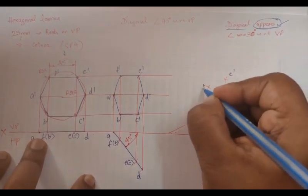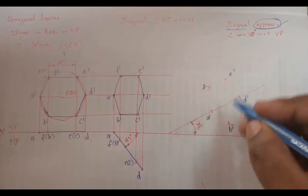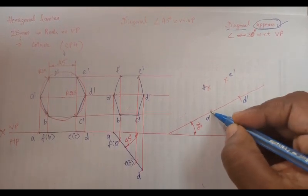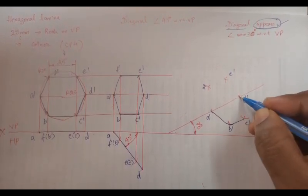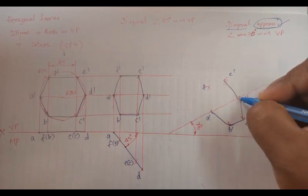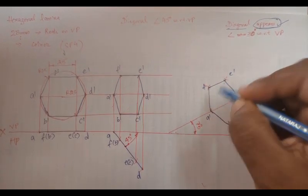Now I am going to join those intersection points: A dash to B dash to C dash to D dash to E dash to F dash. Here F dash, E dash, B dash, C dash is parallel to the diagonal A dash to D dash.